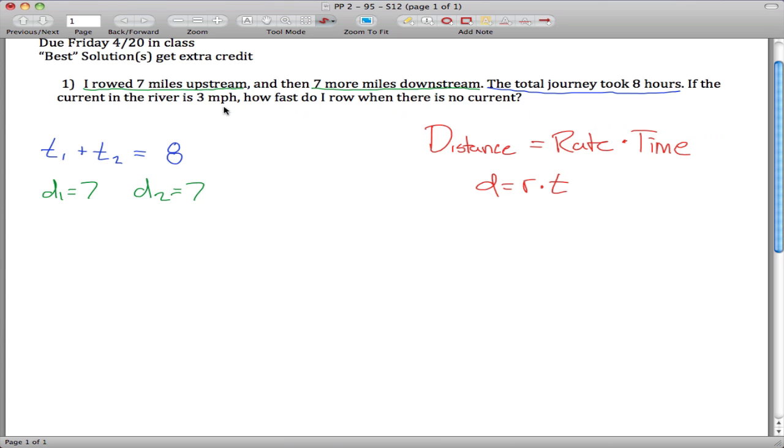Okay, the current is three miles per hour, I'll hold off a minute on that. The question is asking, how fast do I row? In other words, what we're trying to solve for will be speed here. So we'll let X be the variable that we're trying to solve for. And if we let X be how fast do I row when there is no current,